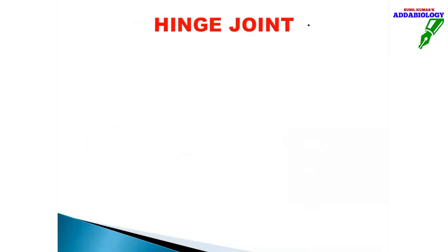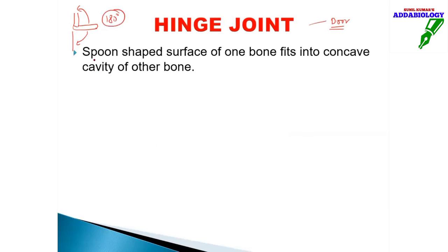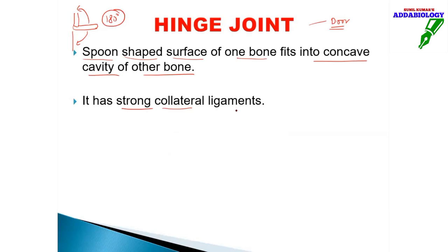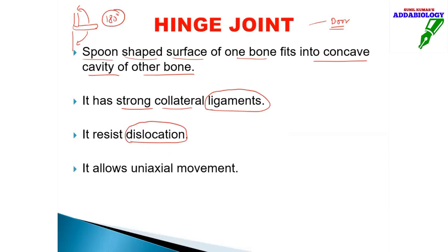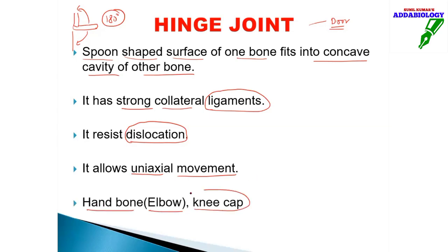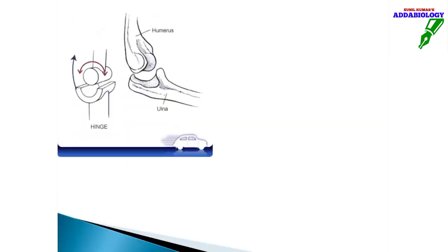Hinge joint is like the hinge on a door. For example, your hand at the elbow shows a hinge joint — you can move your hand straight or at maximum straight the other way, showing only 180 degrees of movement. One bone has a spoon-shaped surface that fits into the concave cavity of the other bone. Hinge joints have strong collateral ligaments and resist dislocation. They always show uniaxial movement — examples are the elbow and the kneecap.